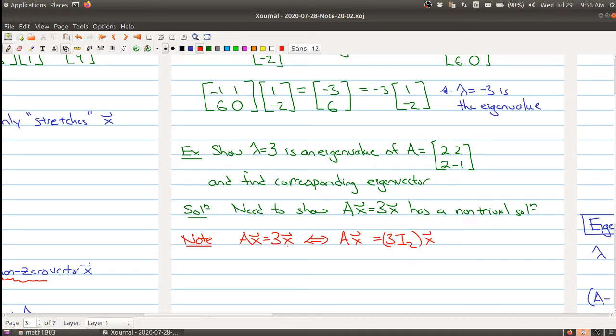So if you're scaling a vector by 3 it's the same thing as first scaling the identity matrix by 3 and then multiplying it by x.